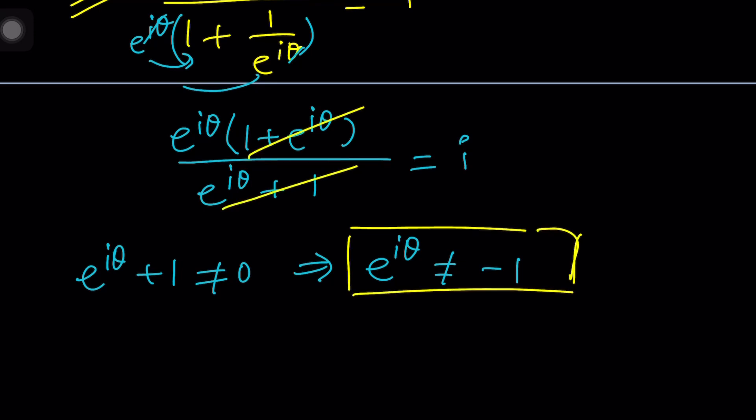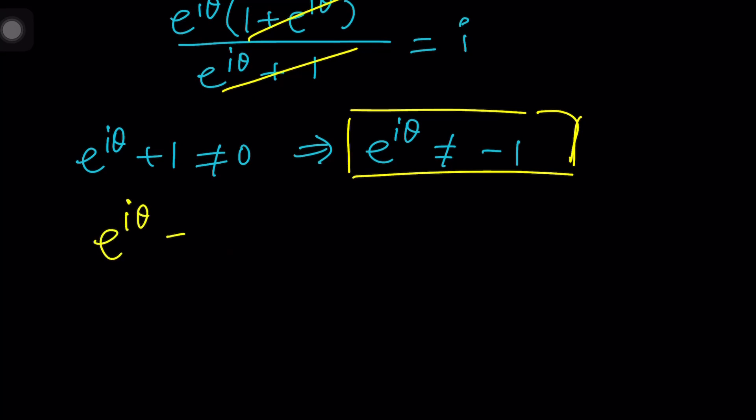Under those conditions, we can go ahead and simplify this. And that's going to give us e to the iθ equals i. Beautiful. And obviously, if e to the iθ equals i, we can guarantee that e to the iθ is not going to be negative 1 because i does not equal negative 1. Wait a minute. Isn't i negative 1? No. i squared is negative 1. Yeah, that's the difference, right? So i is the number whose square equals negative 1.